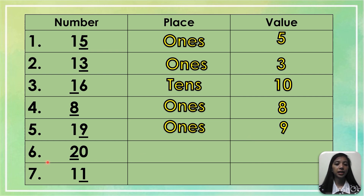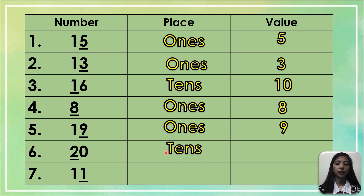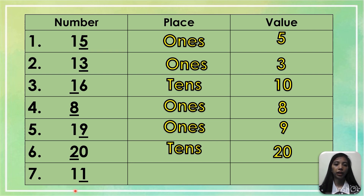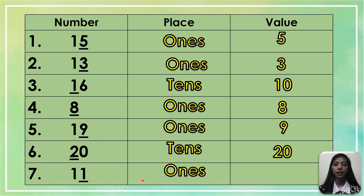Number 6: 20. The underlined digit is 2. The place is the 10s place, and the value is 20. Number 7: we have 11, and the underlined digit is 1, in the 1s place. The value is 1.